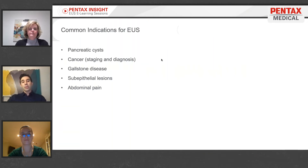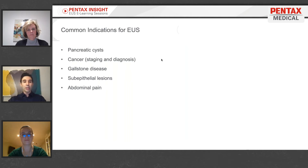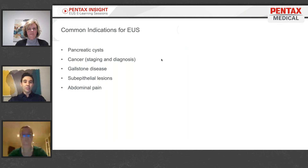Common indications for endoscopic ultrasound: pancreatic cysts remain probably one of the most common reasons we do EUS. When I started ten years ago, pancreatic cysts dominated most of what we did. We find more cysts now because we do more CT scans, more MRIs, more abdominal ultrasounds. Incidentally, pancreatic cysts are found more often. But fortunately, our understanding of pancreatic cyst disease has improved dramatically, and now we tend to reserve endoscopic ultrasound for cysts that may require intervention or further characterization.